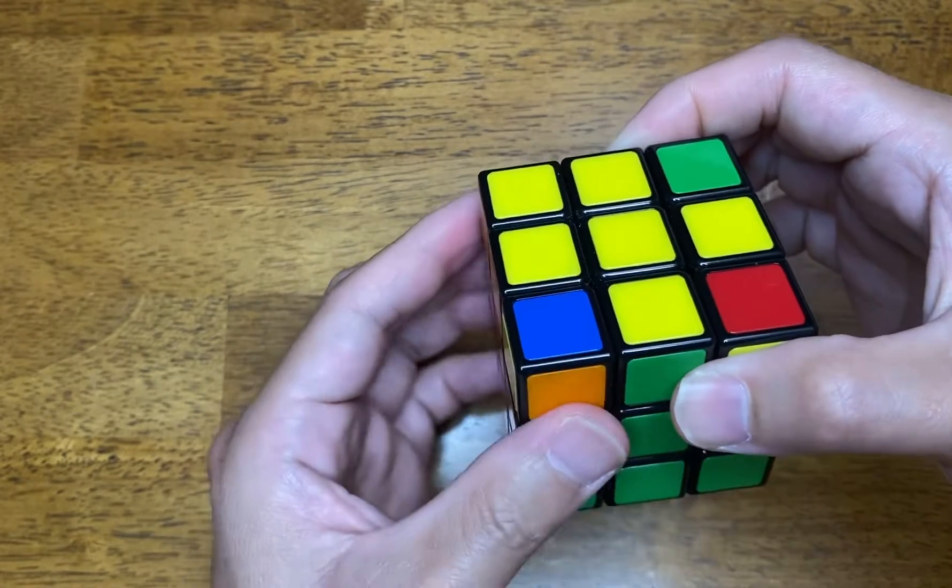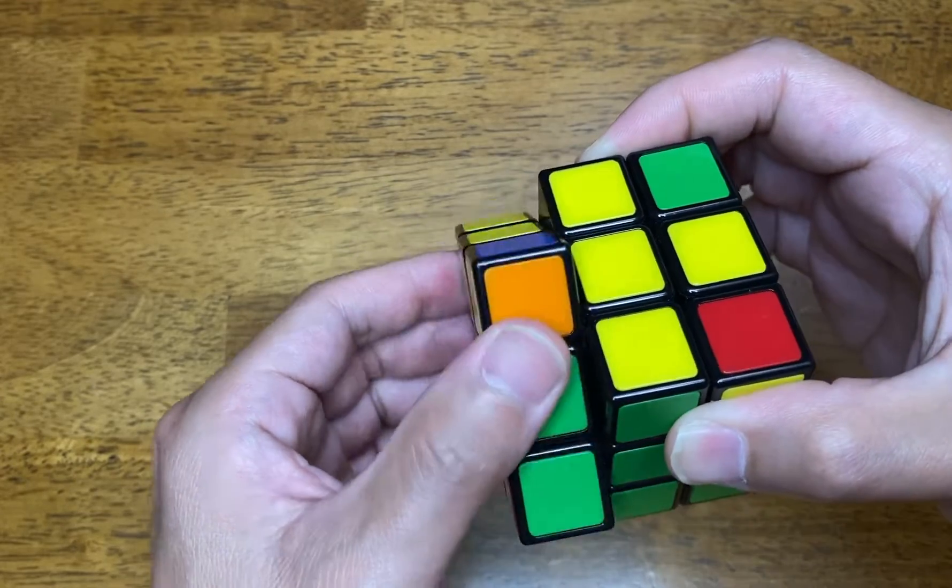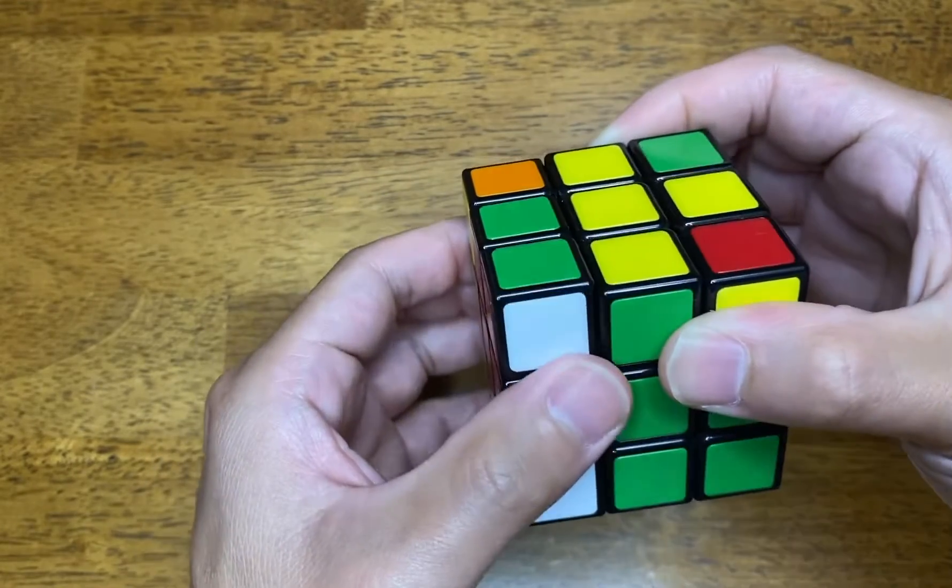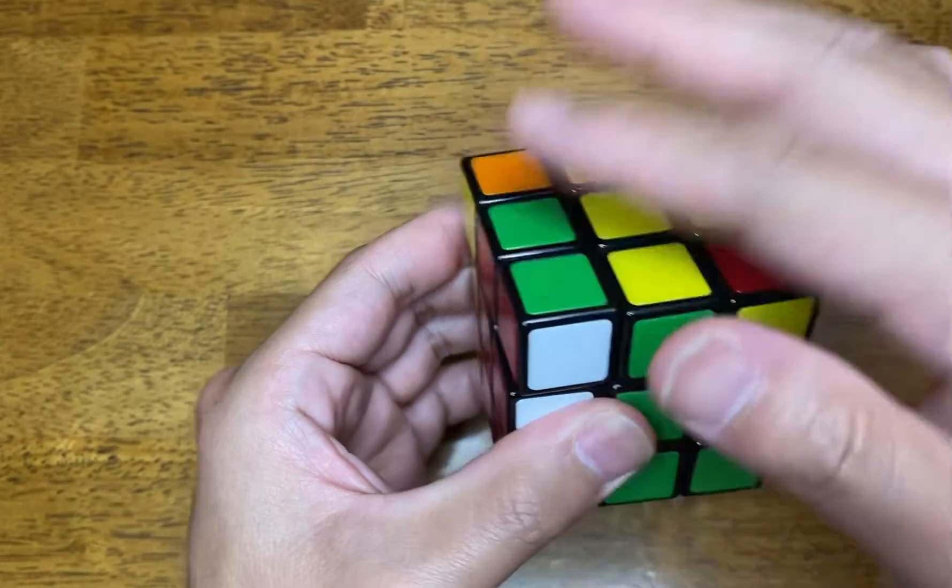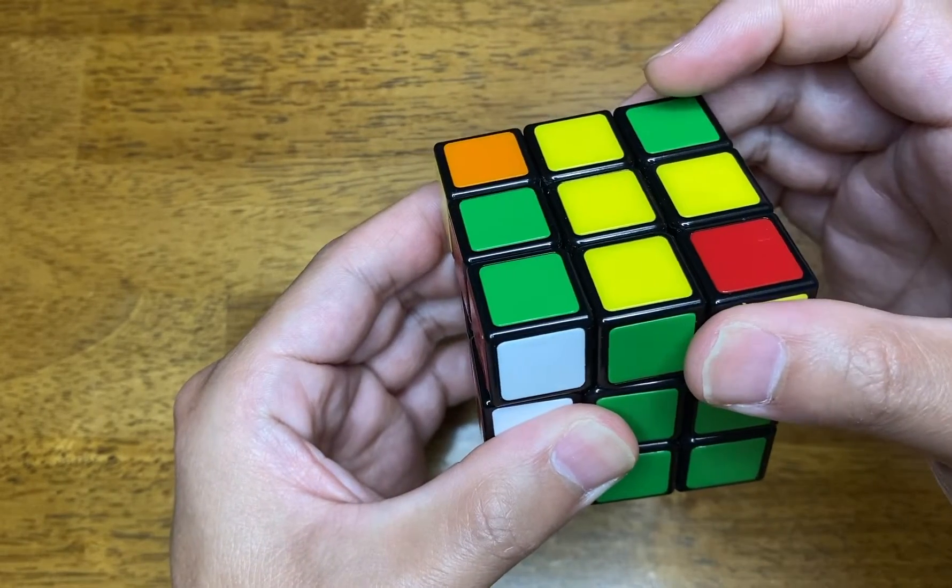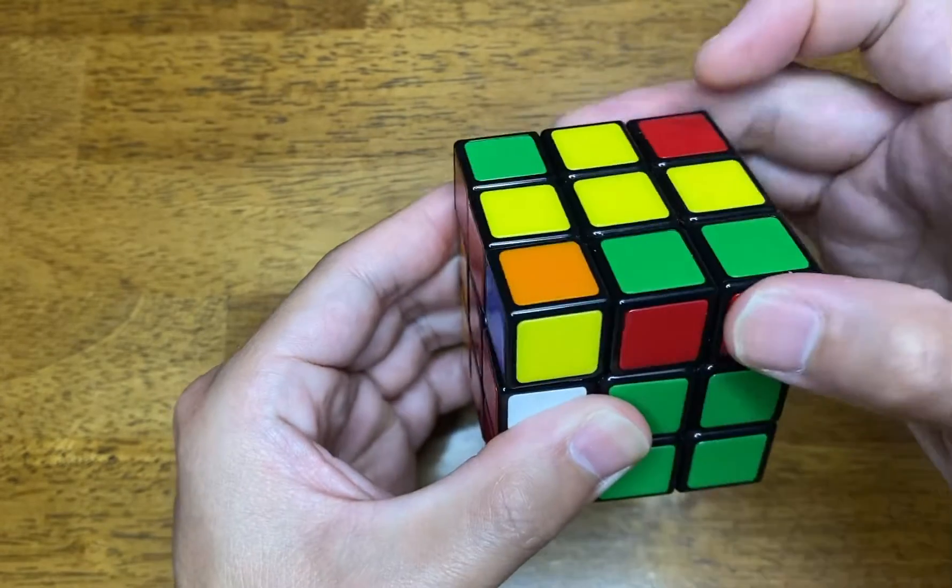and then you do the same thing on the left side. You bring the left side up once, take the top piece and turn it 180 degrees counterclockwise, one, two,